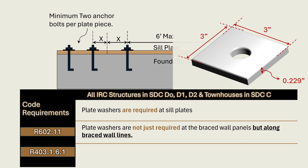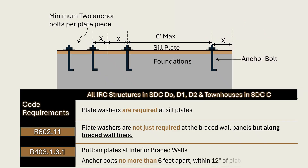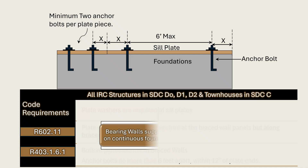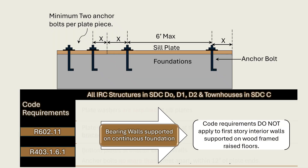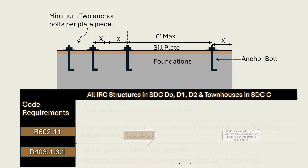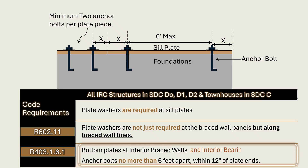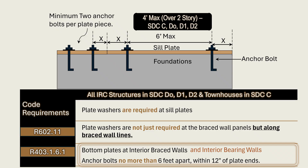According to section R403.1.6.1, bottom plates at interior braced walls shall have anchor bolts spaced at no more than six feet on center and located within 12 inches of the end of each plate section. These requirements apply to walls supported on continuous foundations and do not apply to first-story interior walls supported on wood-framed raised floors, which have specific framing requirements to address load path to exterior cripple walls. Similarly, bottom plates at interior bearing walls on continuous foundations shall have anchor bolts spaced at no more than six feet on center and located within 12 inches of the end of each plate section. For buildings over two stories in height in seismic design categories C, D0, D1, and D2, the spacing of anchor bolts at the sill plate shall not exceed four feet.